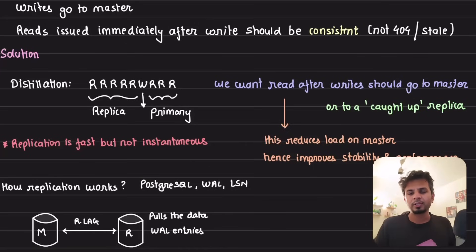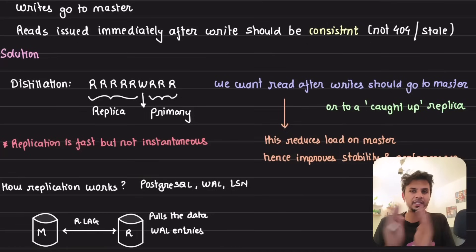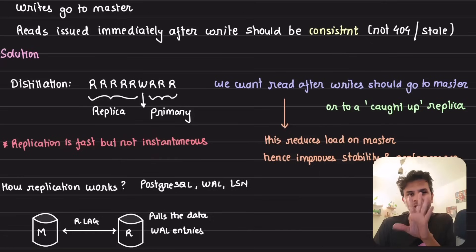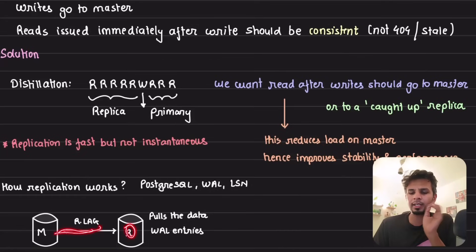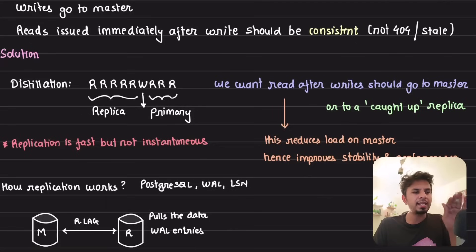To understand the solution we need one prerequisite: understanding how replication works. The problem is writes went to master, reads are going to replica, and your reads happen before the data is replicated. Replication in Postgres, MySQL, or any database is fast but not instantaneous — you typically have to deal with replication lag. The replica keeps pulling from master, not the data itself but the Write-Ahead Log (WAL) file, entry by entry.